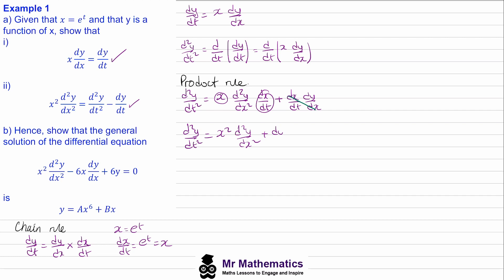But we were asked to make x²·d²y/dx² the subject, so we move dy/dx to the other side. We get x²·d²y/dx² equals d²y/dt² minus dy/dt. For part b we can reduce the differential equation into a simpler form by replacing the x²·d²y/dx² term and the dy/dx term with what we've derived.